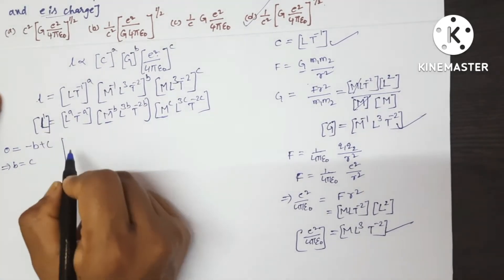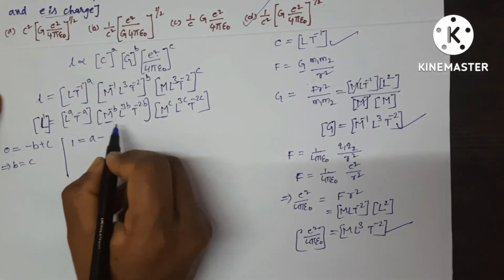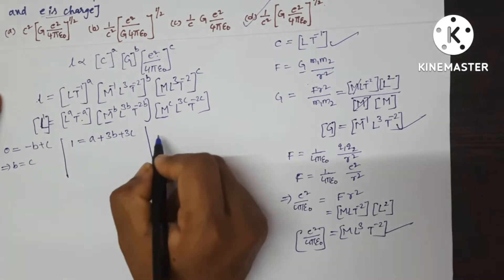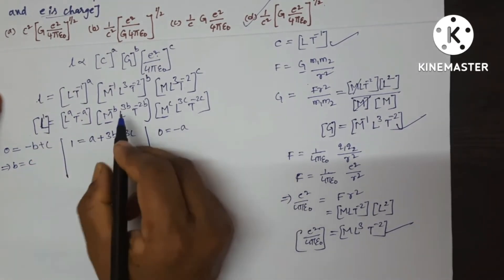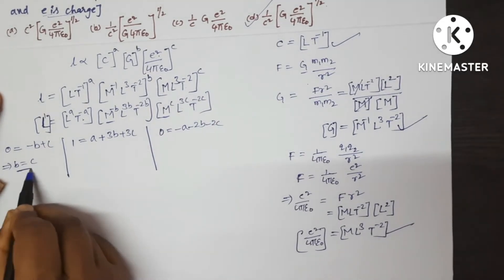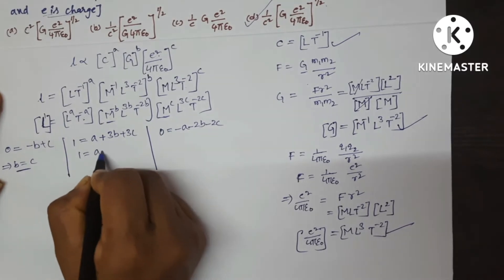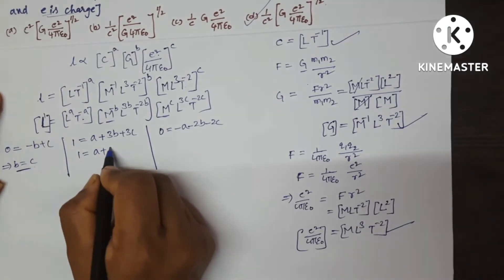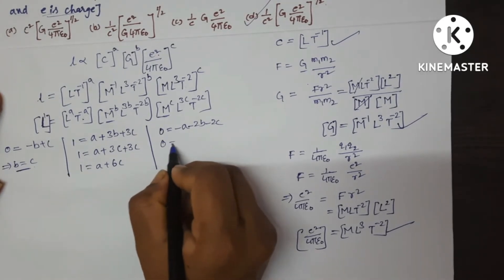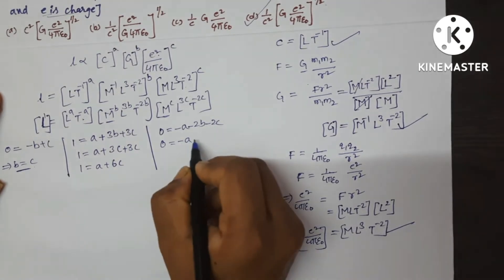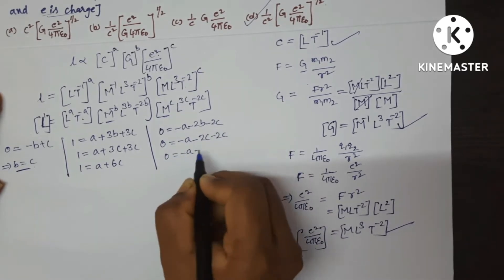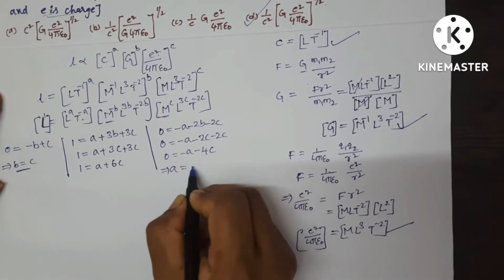Compare the length term: 1 = A + 3B + 3C. Compare the time term: 0 = −A − 2B − 2C. Since B = C, substituting gives 1 = A + 6C and 0 = −A − 4C, so A = −4C. Substituting A = −4C into 1 = A + 6C gives 1 = −4C + 6C = 2C, so C = 1/2.